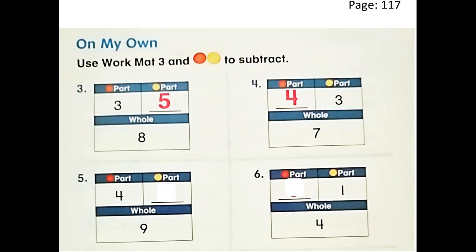Great, grade 1! Let's see the next one — question number 5. We have 9 in all. In the first part we have 4. What's the second part? You can put 4 in your head and count up to 9: 4 in your head, then 5, 6, 7, 8, and 9. We need 5 yellow counters.